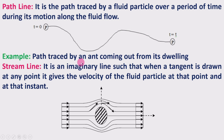An example here: the path traced by an ant coming out from its dwelling. The ant will randomly move, and the path it traces is called a path line.